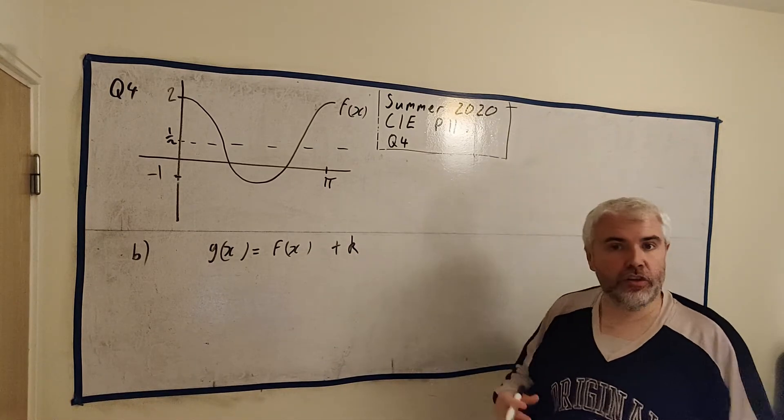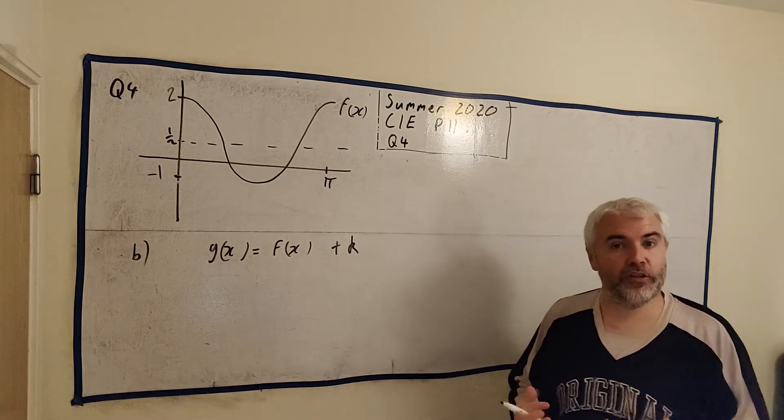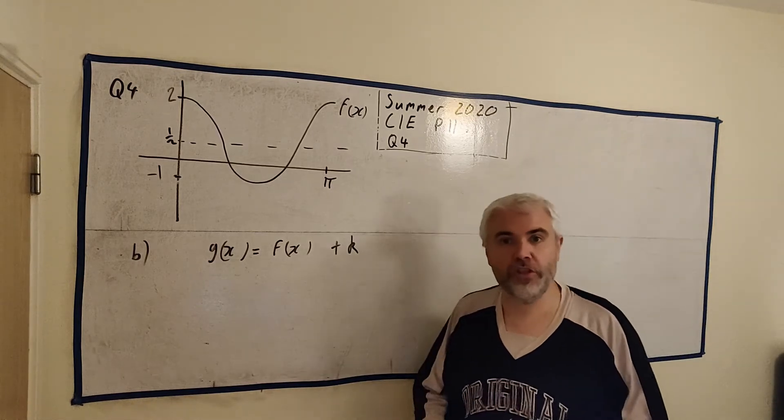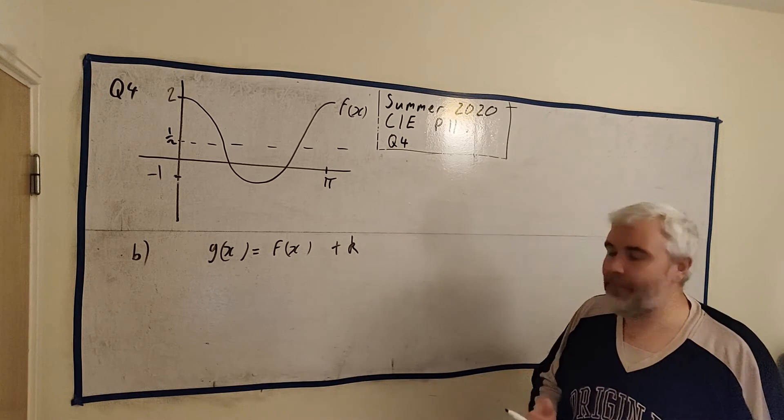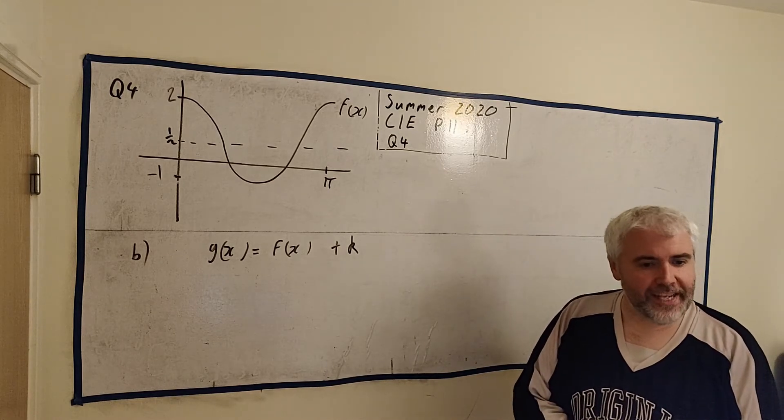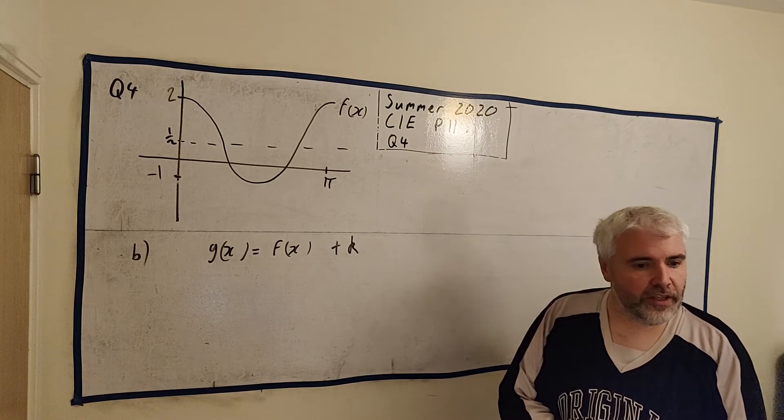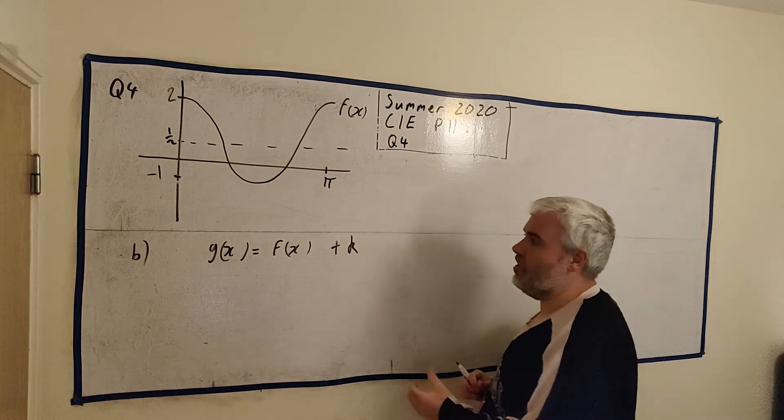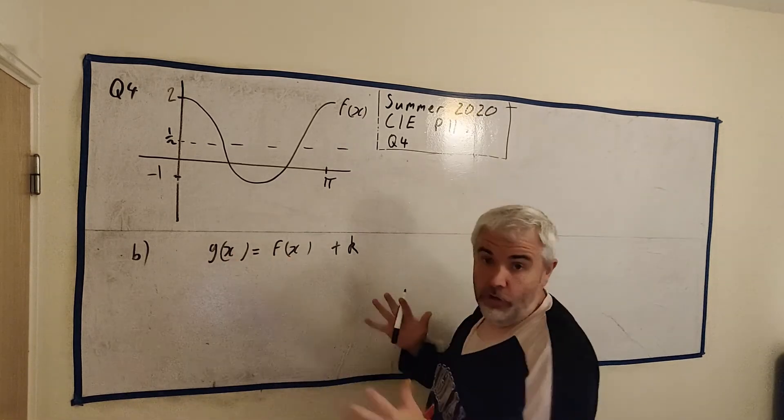Okay, part B again, there's no maths in this one as well. We just need to understand what happens with functions when we add things onto it, how they behave. They tell us some information here. They tell us the x-axis is tangent to the curve y equals g(x). So g(x), a new curve, is tangent to the x-axis.